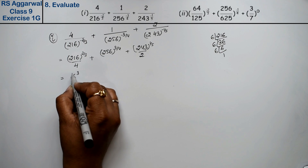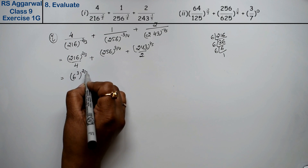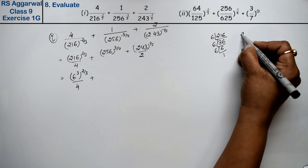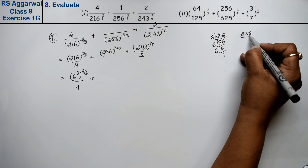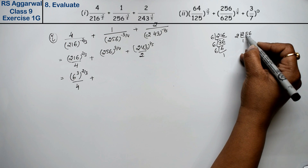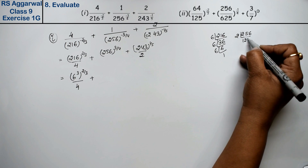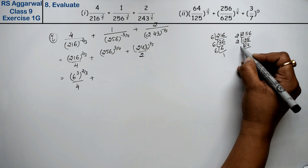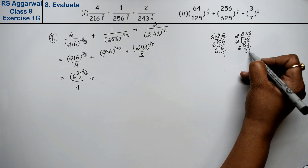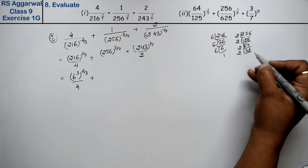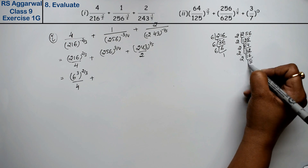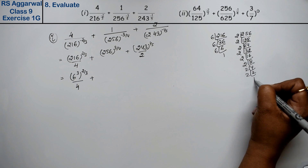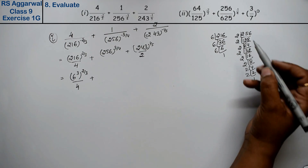So we write 6 to the power 3, multiplied by 2 upon 3, upon 4, plus 256. Now for 256: we get 2 × 2 × 2 × 2 × 2 × 2 × 2 × 2, that means 256 = 2 to the power 8, or equivalently 4 to the power 4. We make 4-4 pairs to identify this as 4 to the power 4 with outer power 3 upon 4.